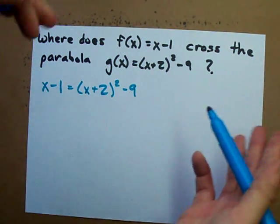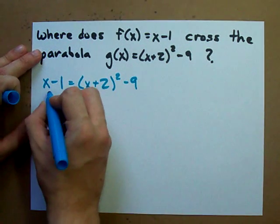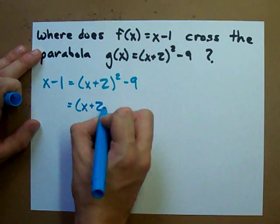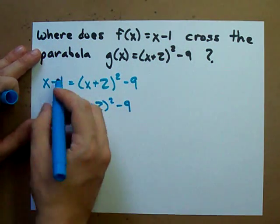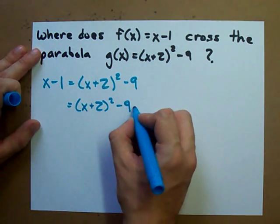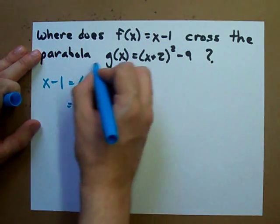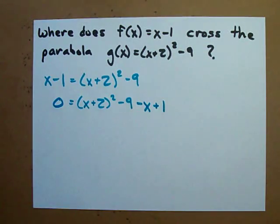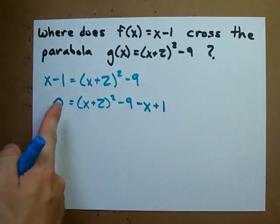Let's move everything to the right side here. So, I've still got my x plus 2 squared minus 9. I move x over, becomes minus x. Move minus 1 over, becomes plus 1. Left with 0 on that side. You want one side to be 0.